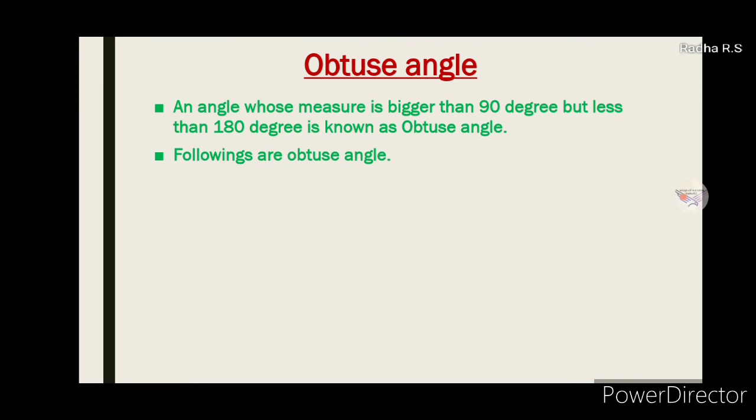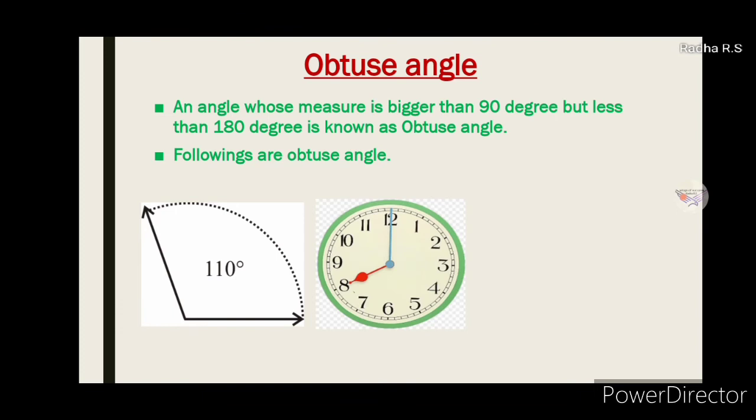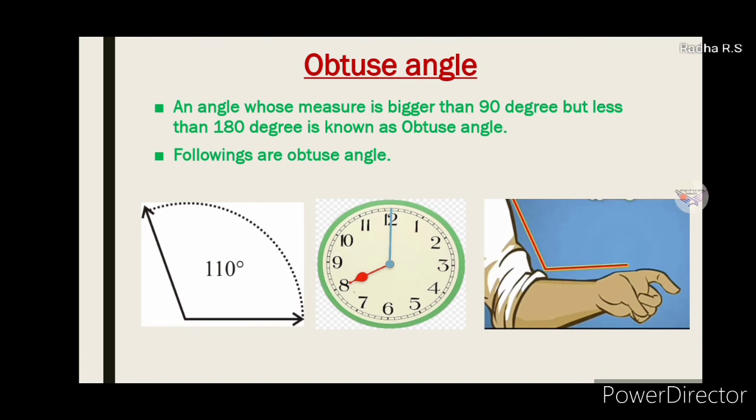Following are obtuse angles. An angle of 110 degrees. Two hands of clock also show obtuse angle. Hey, look at the obtuse angle that can be at your elbow.